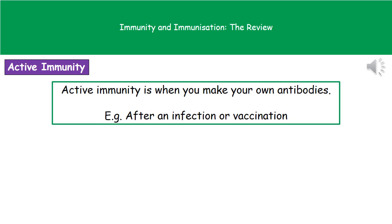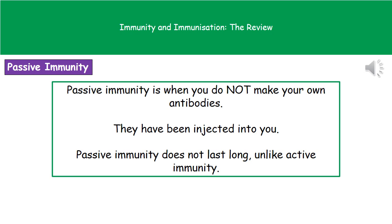We experience two different types of immunity. The first is active immunity, where our body makes its own antibodies — this is what we'd experience after an infection or after a vaccination. The second is passive immunity, where we don't make our own antibodies; instead, the antibodies have been injected into us. A key difference between the two is that passive immunity is very limited in how long it lasts, whereas active immunity lasts much longer.